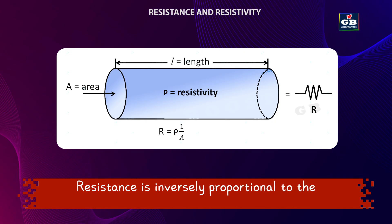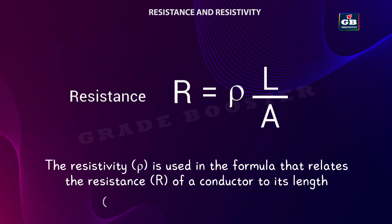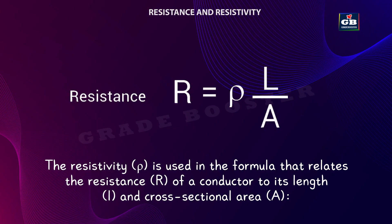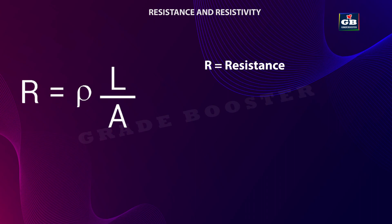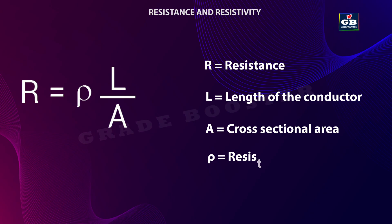Resistance is inversely proportional to the cross-sectional area of the conductor — as the cross-section increases, resistance decreases. The resistivity rho is used in the formula that relates the resistance R of a conductor to its length L and cross-sectional area A: R equals rho times L divided by A. In this formula, R is the resistance, L is the length of the conductor, A is the cross-sectional area, and rho — resistivity — shows how much the material itself opposes the flow of current.